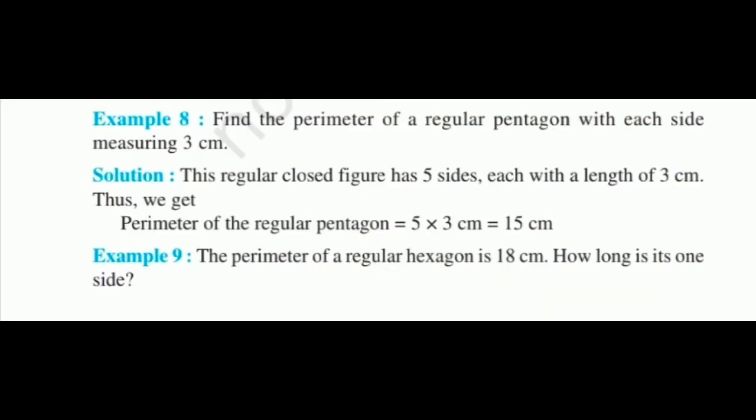Find the perimeter of a regular pentagon with each side measuring 3 centimeters. This regular closed figure has 5 sides each of length 3 centimeters. Thus, perimeter equals 5 into 3, which equals 15 centimeters. The perimeter of a regular hexagon is 18 centimeters. How long is one side? Since there are 6 sides, the length of one side is 18 divided by 6, which equals 3 centimeters. Thank you.